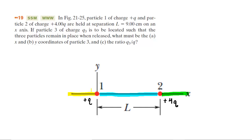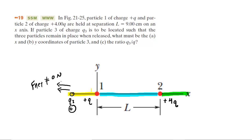For a moment, let's assume we place Q3 in the yellow region and that it is positively charged. In that case, Q1 would repel Q3 to the left, and Q2 would also repel Q3 to the left, because like charges repel. But that can't work because the net force acting on Q3 would not be equal to zero Newtons, and the question requires the net force on all charges to be zero.